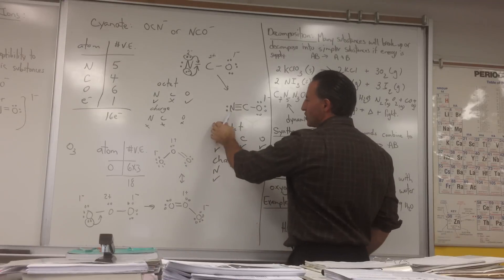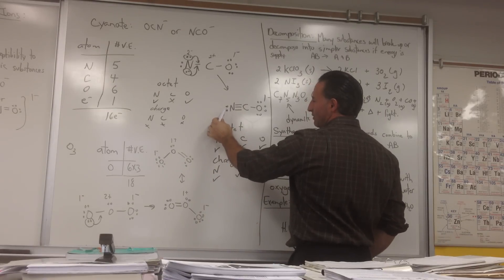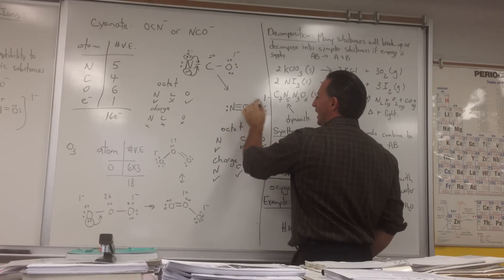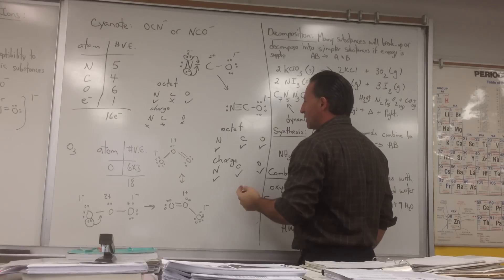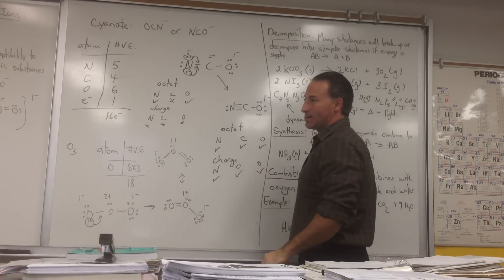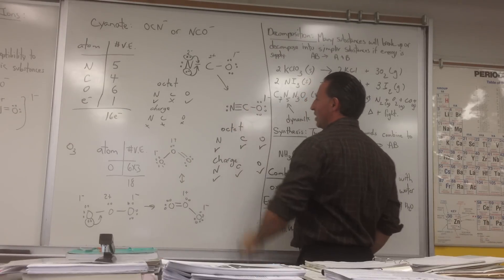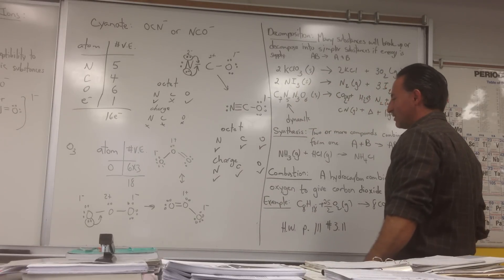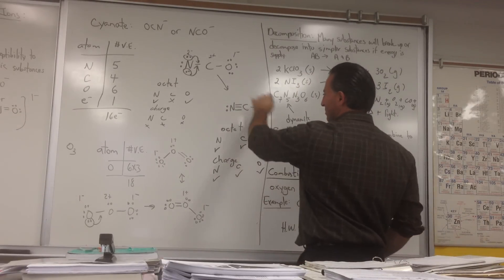There is no formal charge on nitrogen because it wants possession of 5 electrons, and it has 1, 2, 3, plus 2, 5. Carbon wants 4 and it has 1, 2, 3, 4. And oxygen would like 6 but it has 7, but in fact the cyanate anion has to have a minus 1 charge, and the most logical place to put that negative charge would be on the oxygen because it has the highest electronegativity, and in fact that's what is observed in nature.